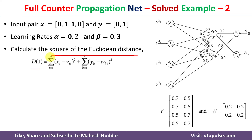d1 equals summation for i from 1 to 4 — four because with respect to X inputs we have four components — of (x_i minus v_i1) squared, plus summation for k from 1 to 2 — two because there are two units in Y — of (y_k minus w_k1) squared.